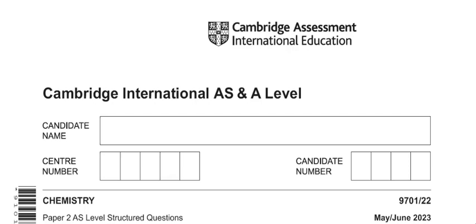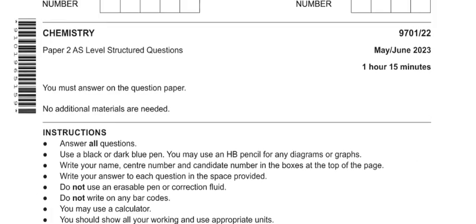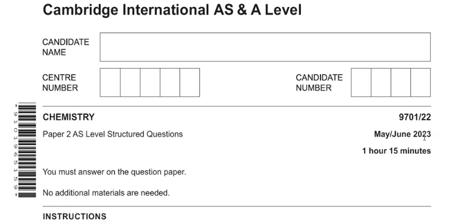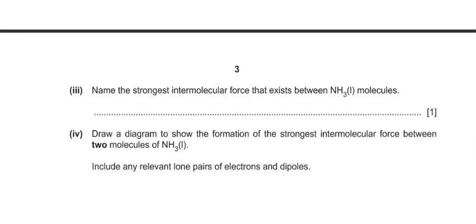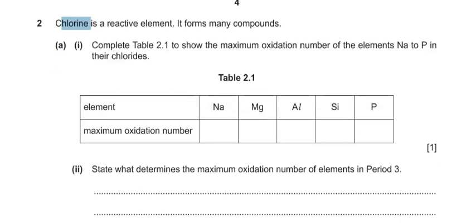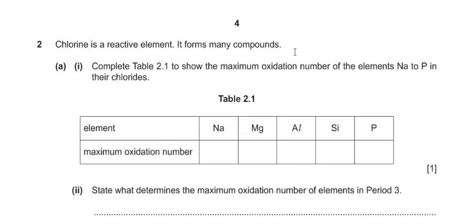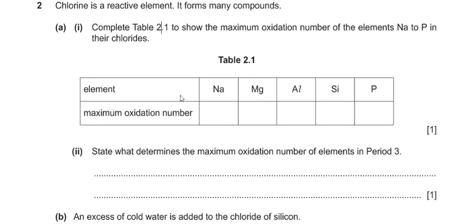Welcome back. We are going to continue solving the paper from our previous video. Today we will start question two of the same paper — May/June 2023. In this question, chlorine is described as a reactive element that forms many compounds. The question asks us to complete table 2.1 to show the maximum oxidation number of elements from sodium to phosphorus in their chlorides.